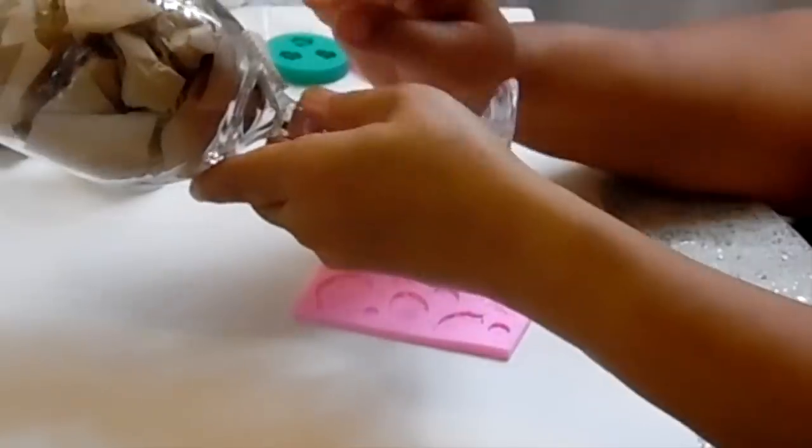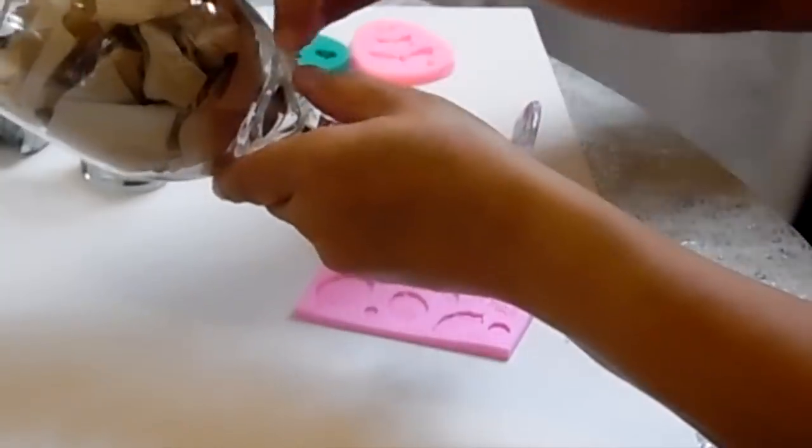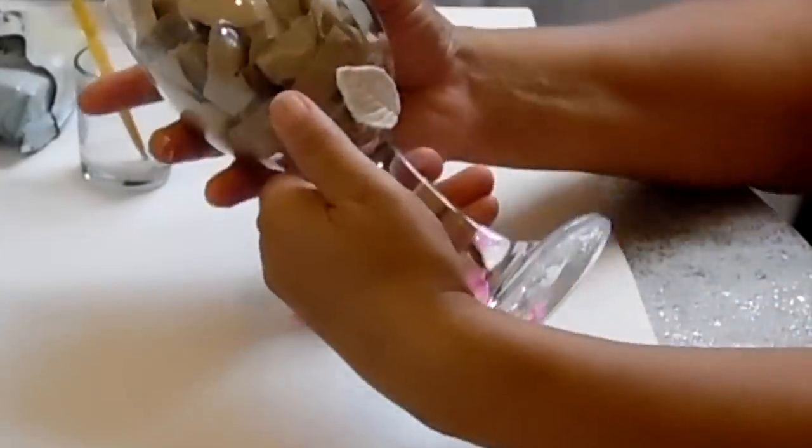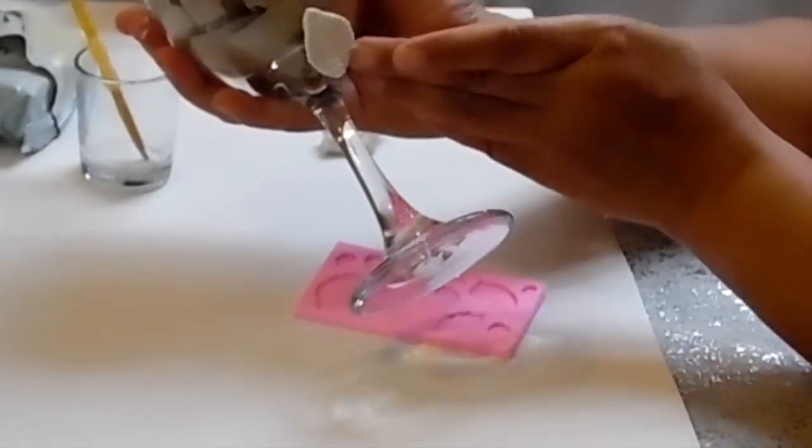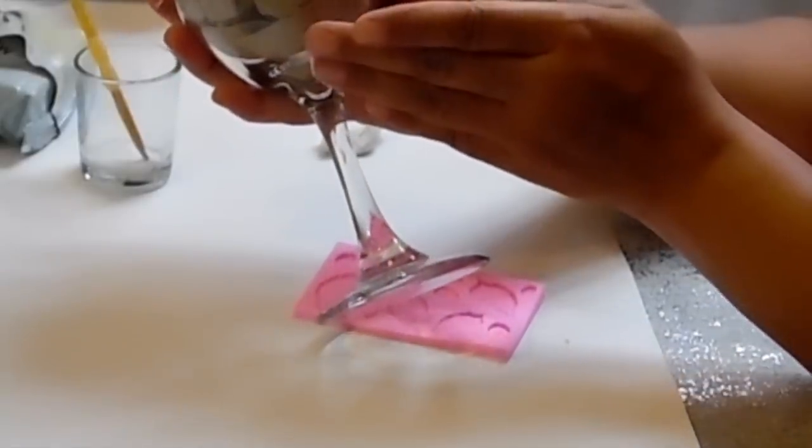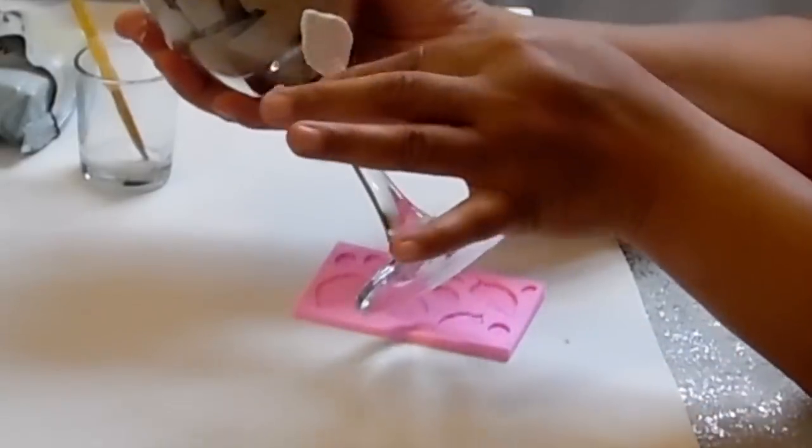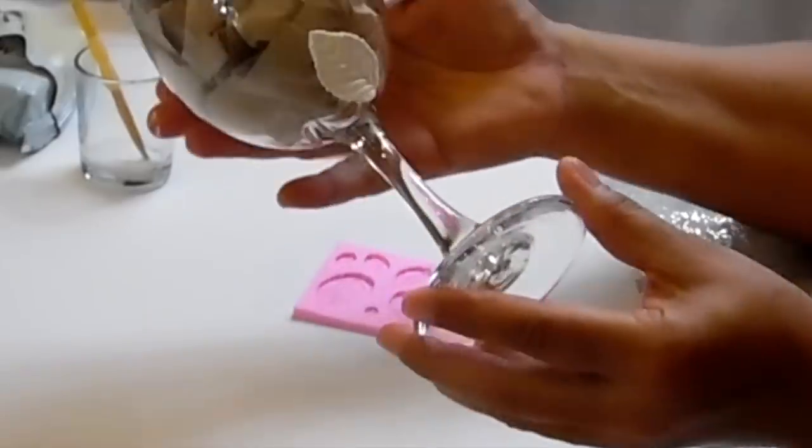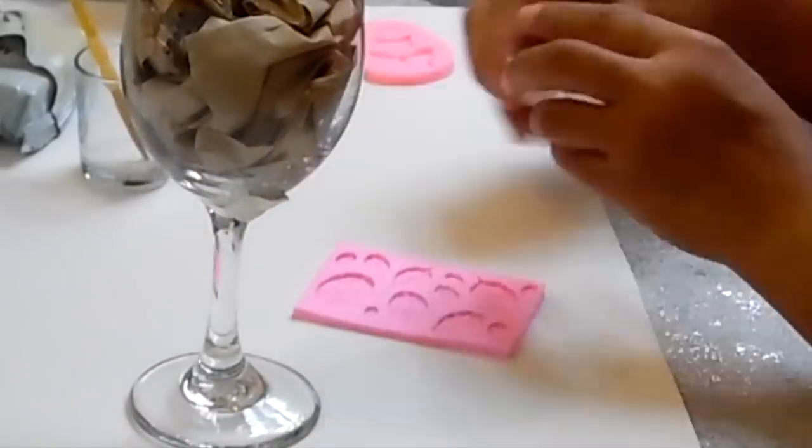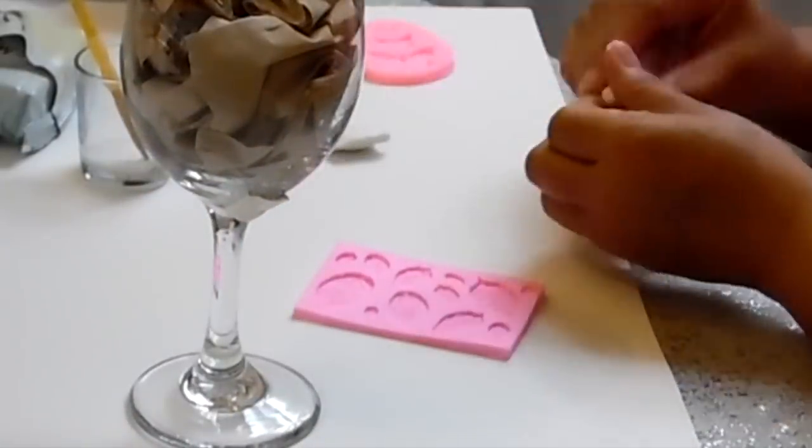Brush some Mod Podge on the back of the leaf and then place it on your glass. Make sure that the entire leaf is pressed against the glass. Make another leaf and repeat the same steps.